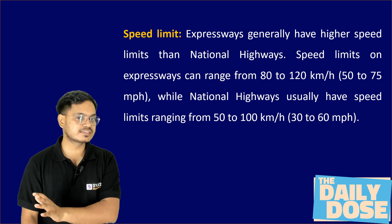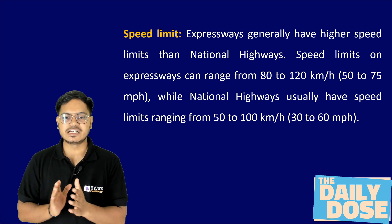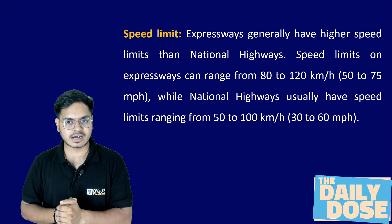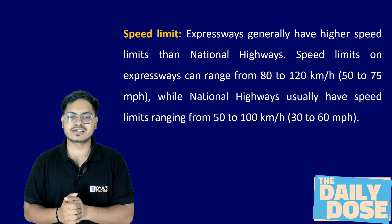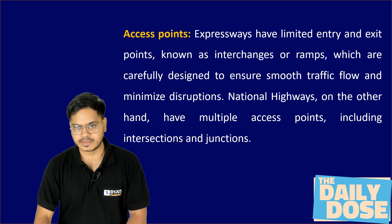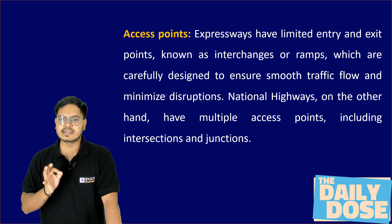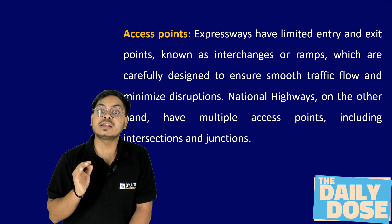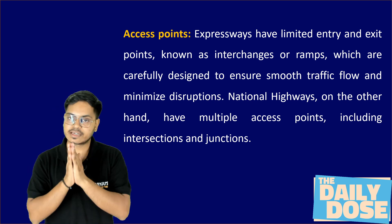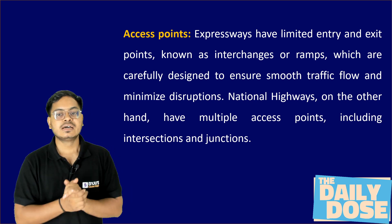Next is speed limit. Expressways generally have higher speeds — the speed limit on an expressway can go up to 80 to 120 kilometers per hour, whereas on a national highway it goes up to 100 kilometers per hour only. Then we have access points. Expressways have limited entry and exit points; nobody can enter from wherever they want — there are controlled access points.